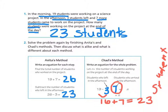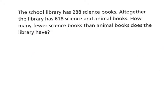That was two different ways, boys and girls, that you could solve this word problem. Let me show you another problem. This is again going to be a two-step word problem. My word problem says: the school library has 288 science books. Altogether, the library has 618 science and animal books. How many fewer science books than animal books does the library have?